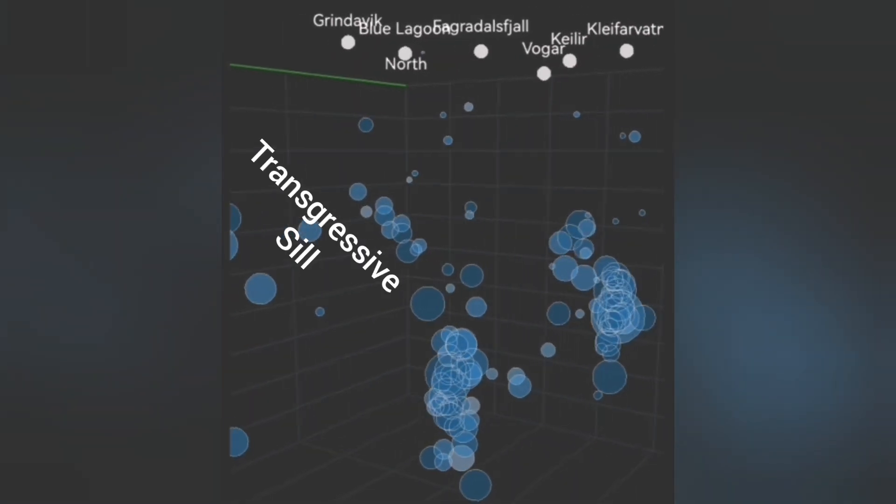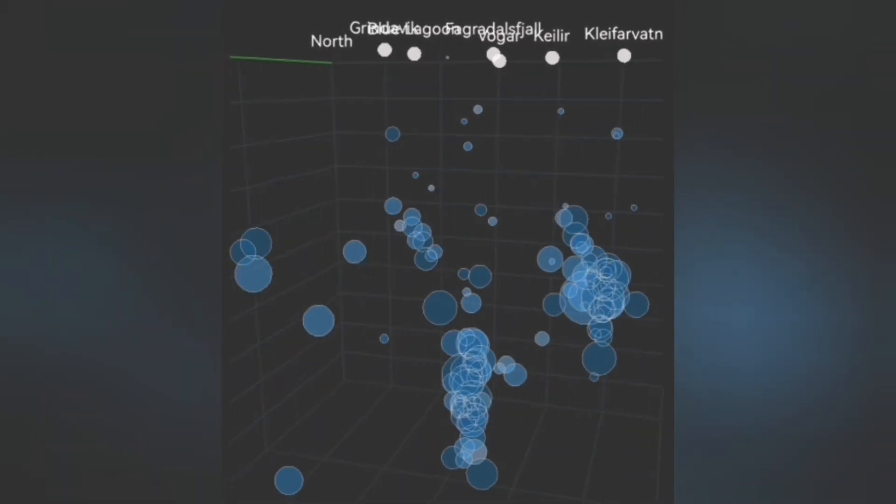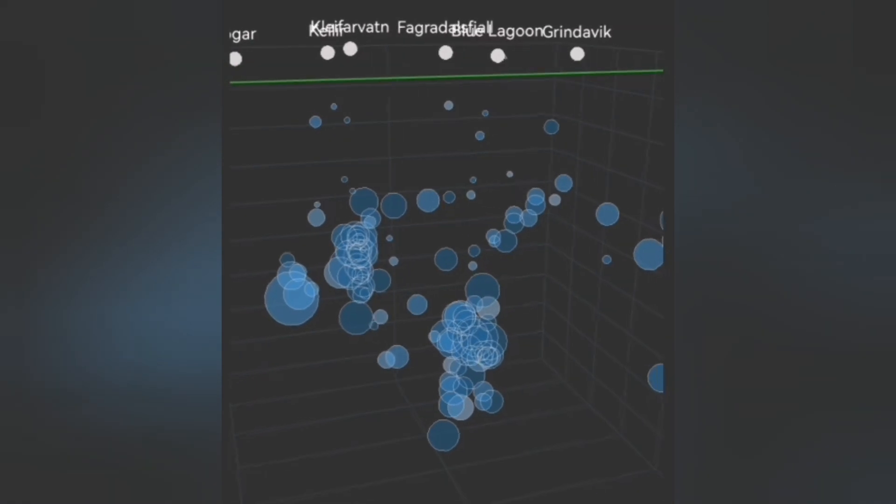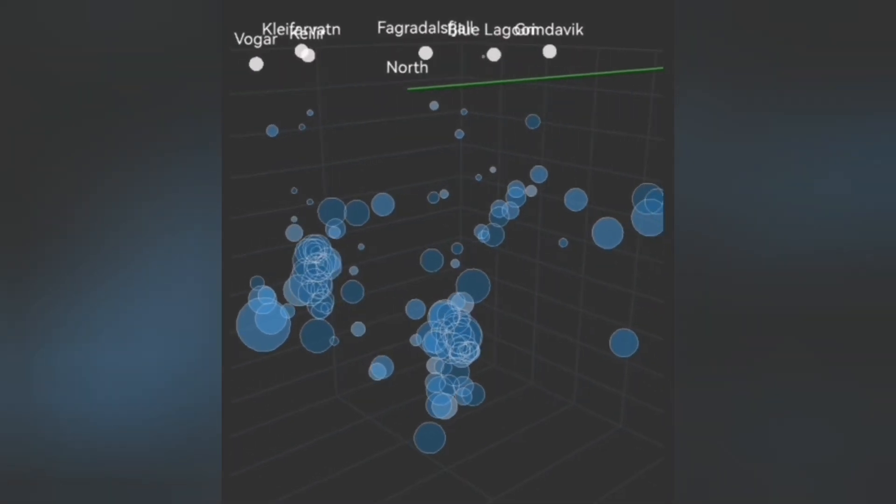We call it a transgressive seal in geological terms, a seal which has an angle and just rises gradually, but not vertically.